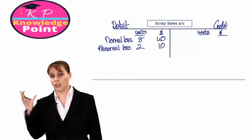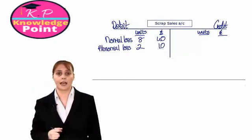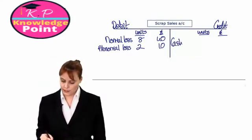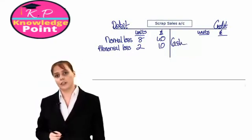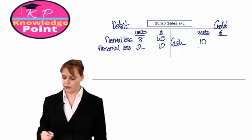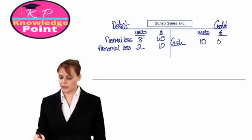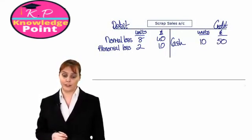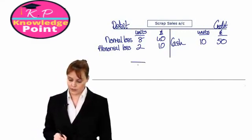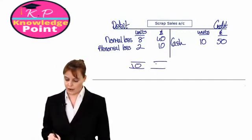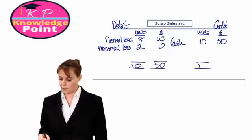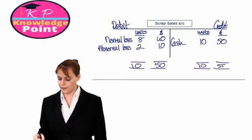Closing out our scrap sales account — in addition to the normal loss units, we also sell the 2 abnormal loss units. Total cash received is £50, so our scrap sales account is balanced for the period.